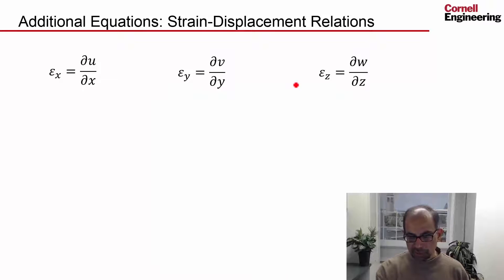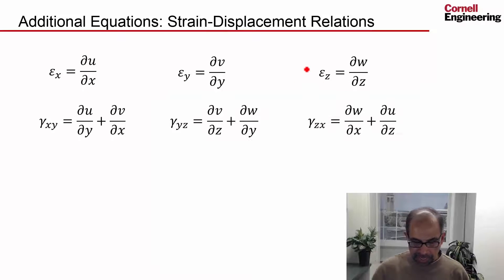So you have the three normal strains related to the displacements, and then we have the three shear strains, and we have seen these before. And the assumptions embedded in these relations is that we have small strains, both in the normal and for shear.